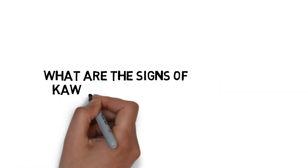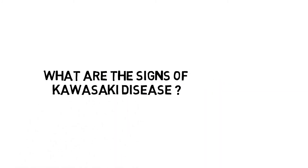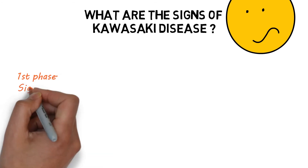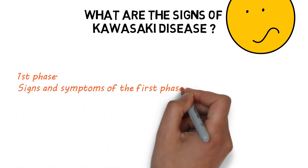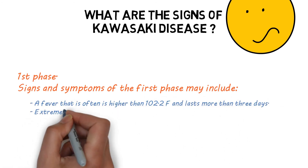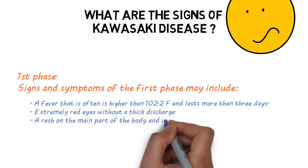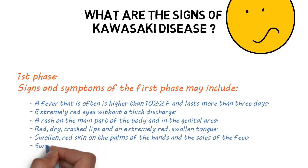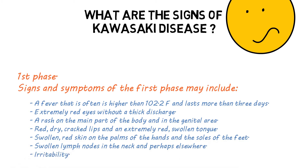What are the signs of Kawasaki disease? Kawasaki disease signs and symptoms usually appear in three phases. In the first phase, signs and symptoms may include: a fever that is often higher than 102.2°F and lasts more than three days; extremely red eyes without a thick discharge; a rash on the main part of the body and in the genital area; red, dry, cracked lips and an extremely red, swollen tongue; swollen, red skin on the palms of the hands and the soles of the feet; swollen lymph nodes in the neck; and irritability.